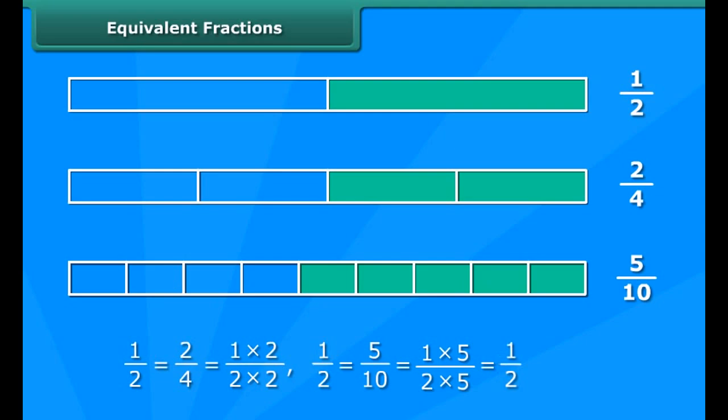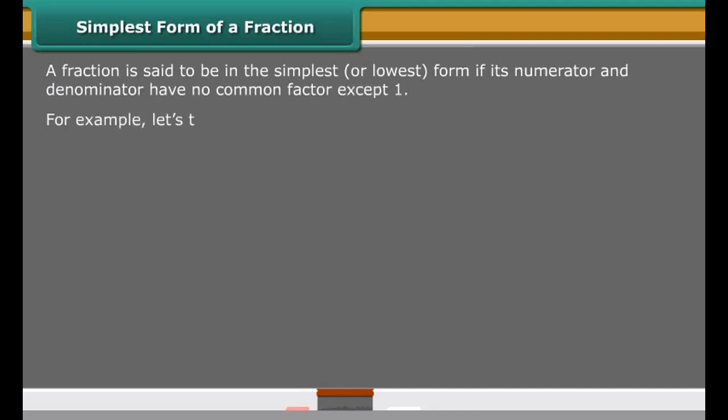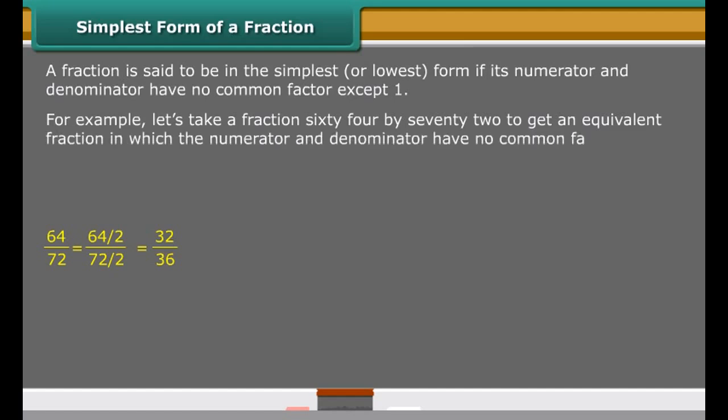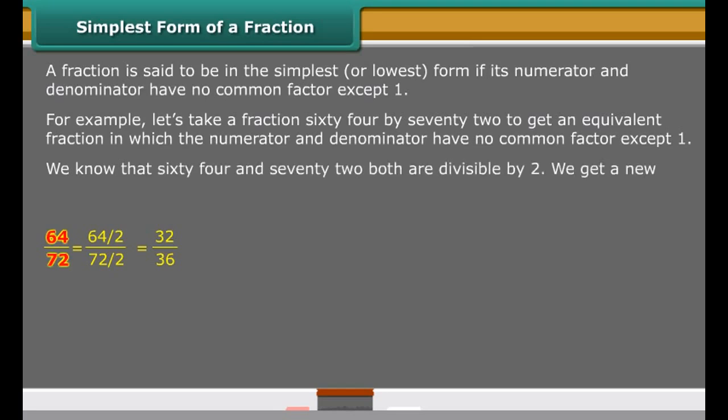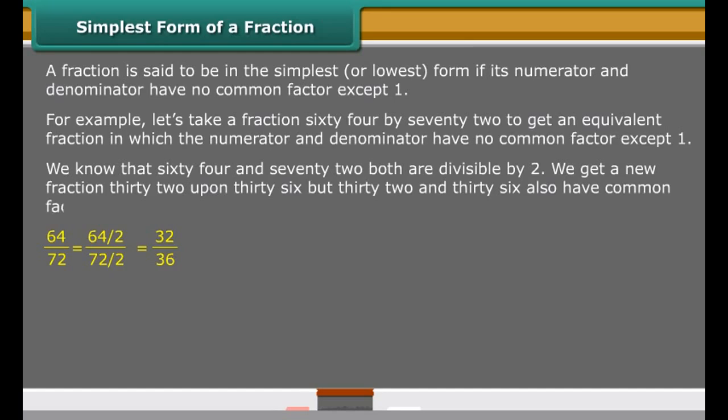Fraction is said to be in the simplest or lowest form if its numerator and denominator have no common factor except 1. For example, let us take a fraction 64 by 72. To get an equivalent fraction in which the numerator and denominator have no common factor except 1, we know that 64 and 72 both are divisible by 2. We get a new fraction 32 upon 36. But 32 and 36 also have common factors: 1,